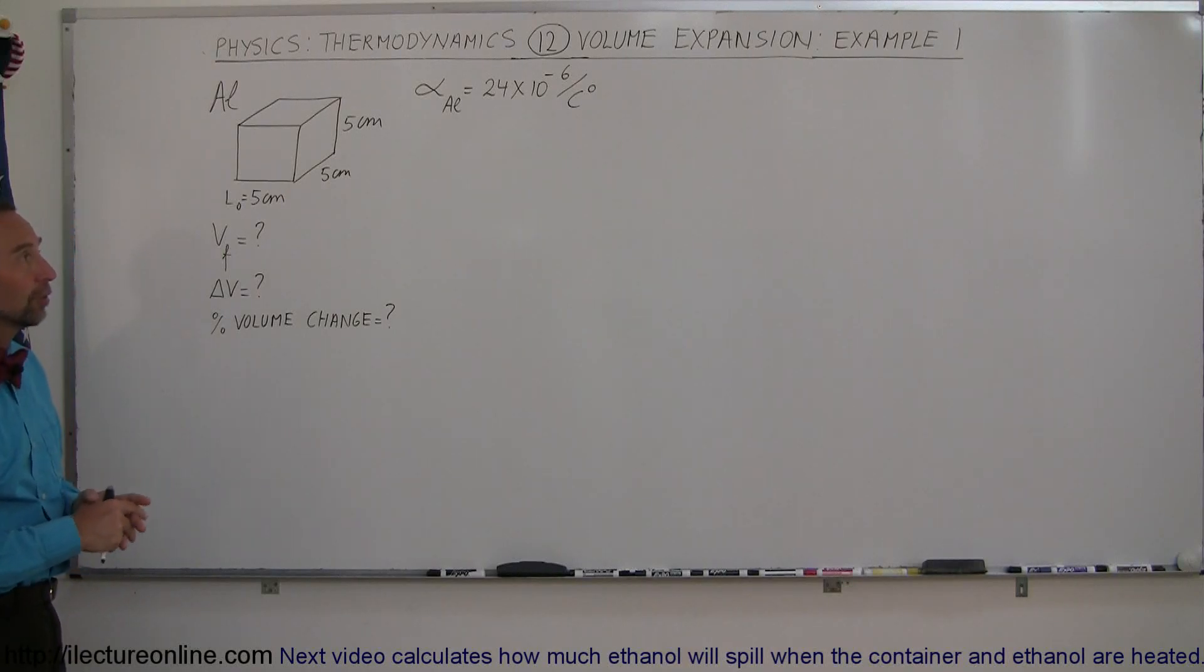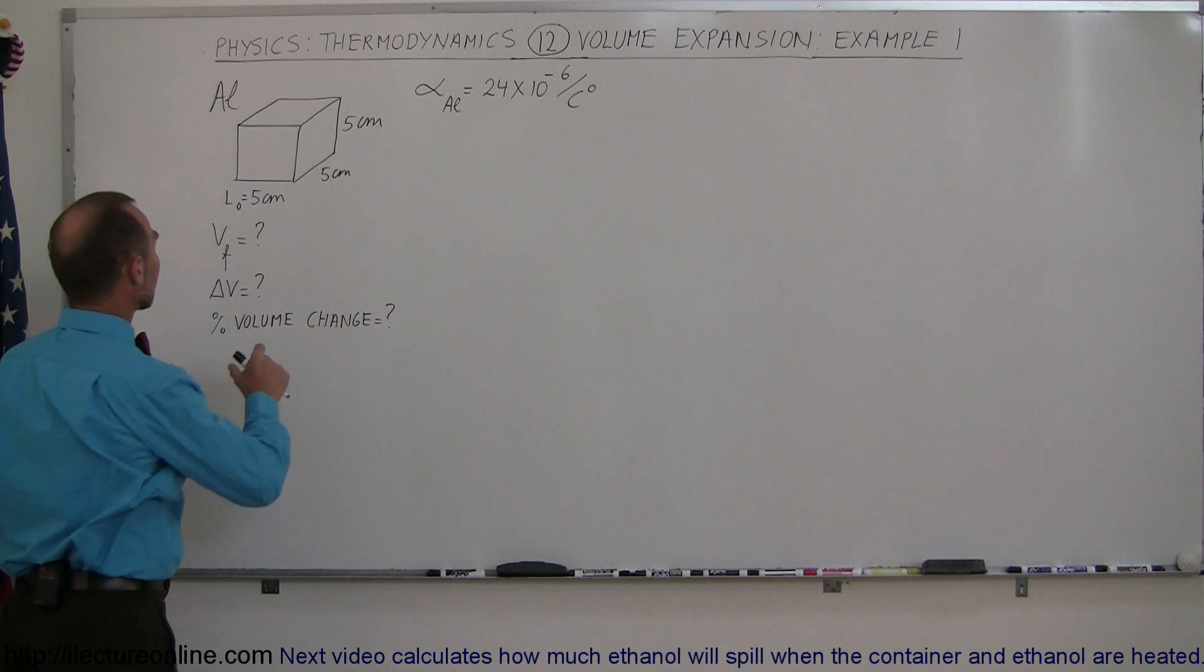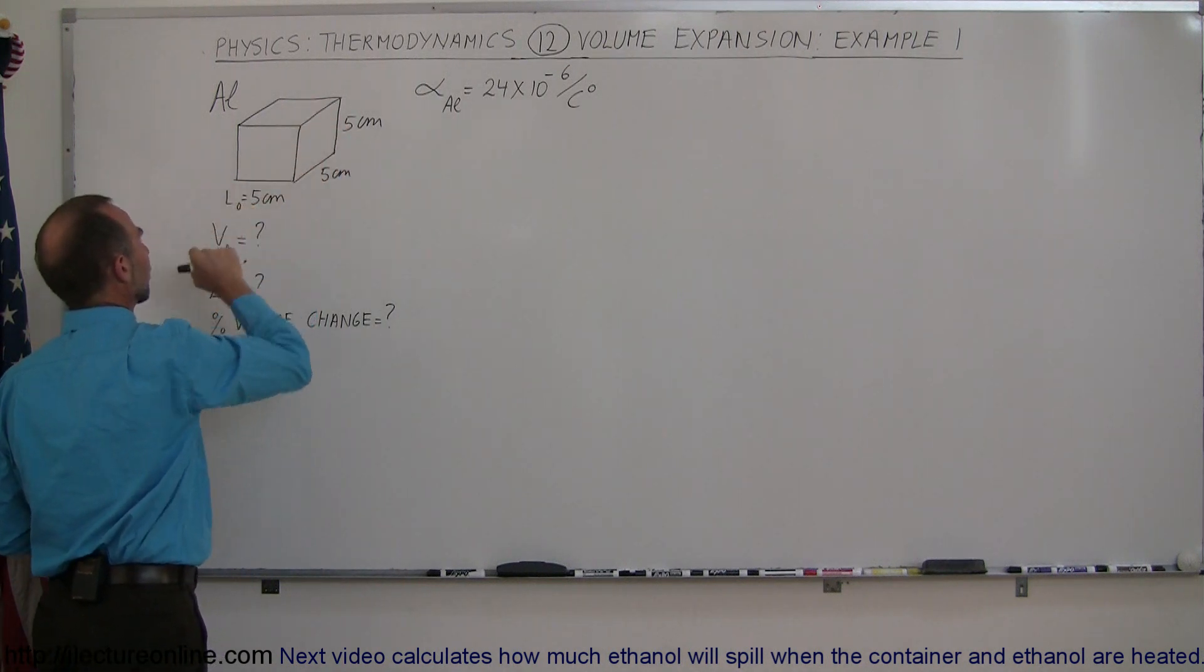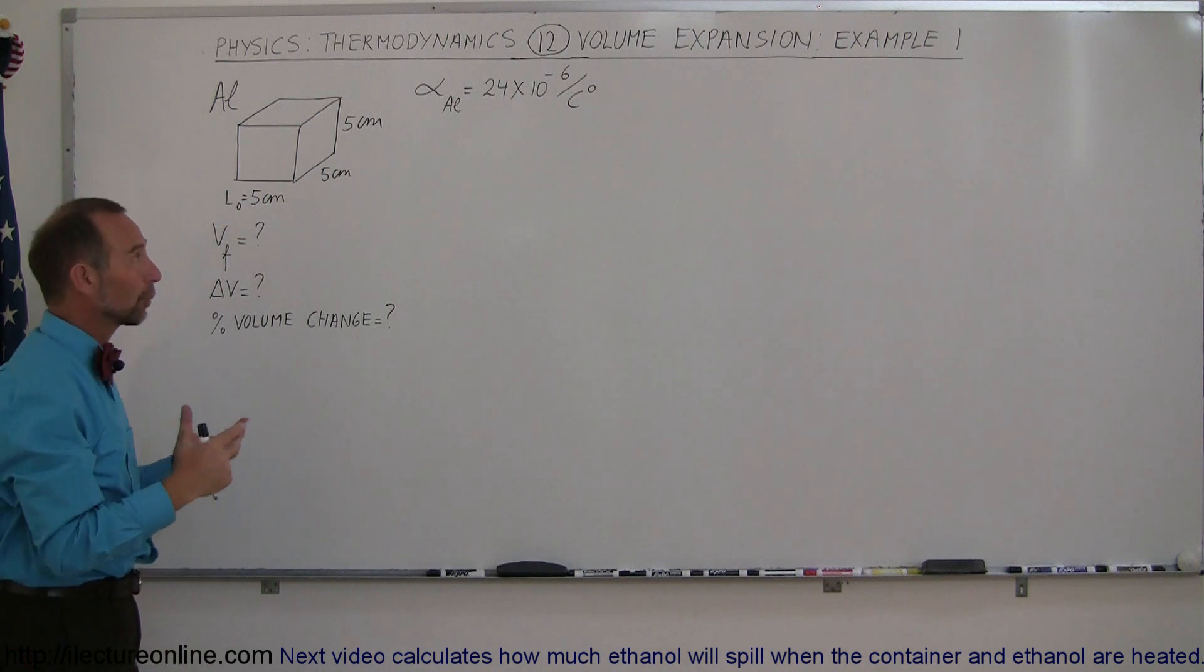Our first example of how to use the volume expansion is a little cube right here. We have a little aluminum cube that's 5 centimeters by 5 centimeters by 5 centimeters. That's the original dimensions before we heat it up.